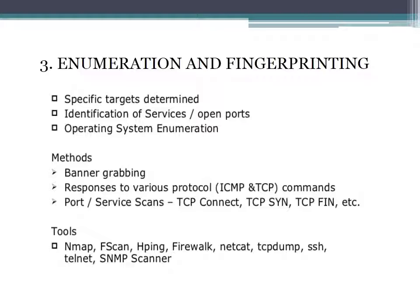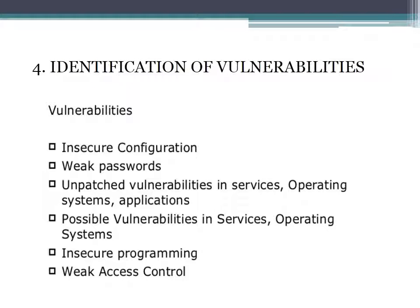Tools used in enumeration and fingerprinting include NMAP, FSCAN, HPING, FIWALK, NETCAT, TCP DUMB, SSH, TELNET, and SNMP scanner.